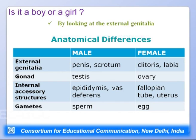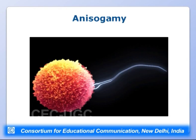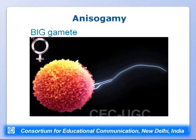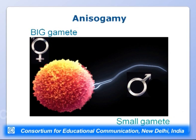Males produce gametes called sperm and females produce eggs. Males and females are defined by anisogamy — the production of morphologically distinct gametes. The individual producing the larger gamete (egg) is termed female, and the one producing the smaller gamete is termed male. This distinction is followed throughout the animal kingdom.